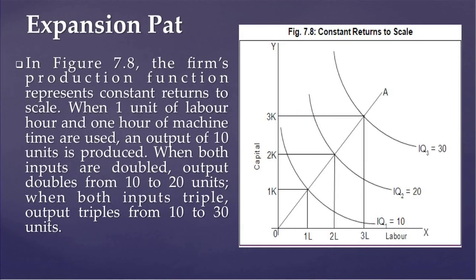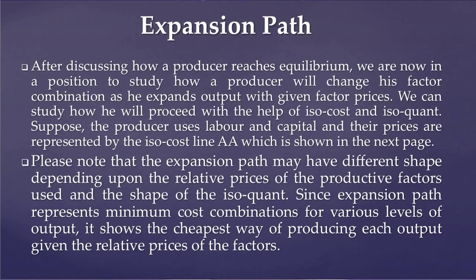Now let us discuss the concept of expansion path, shown with the help of figure 7.8. In figure 7.8, the firm's production function represents constant returns to scale. When 1 labor hour and 1 machine hour are used, output of 10 units is produced. When both inputs are doubled, output doubles from 10 to 20. When both inputs are tripled, output triples from 10 to 30. After discussing how a producer reaches equilibrium, we can now study how a producer will change his factor combination as he expands output with given factor prices, using isocost and isoquant curves. Suppose the producer uses labor and capital, and their prices are represented by the isocost line AA. Please note that the expansion path may have different shapes depending upon the relative prices of the productive factors used and the shape of the isoquant.